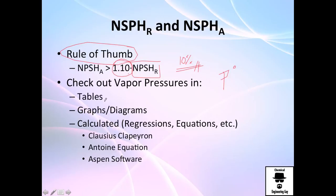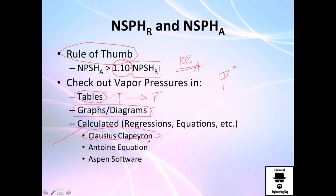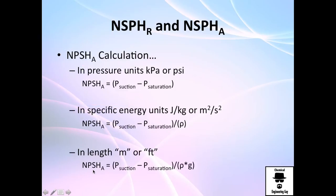How do we calculate vapor pressure? There are many ways: you can look it up directly on the internet or in tables — for every substance there is a temperature-vapor pressure relationship. You could also use graphs or diagrams, though that's less recommended. Analytically, you can use the Clausius-Clapeyron equation, which is not perfect, or the Antoine equation, which is reasonably accurate. In chemical engineering, simulation software like Aspen is commonly used to find vapor pressures for many substances.